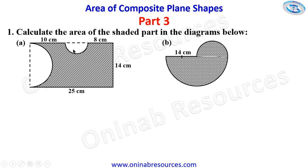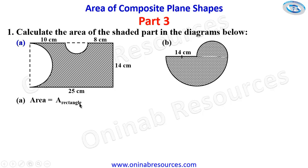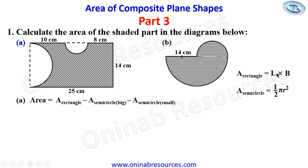We have two diagrams here, A and B. We start with A. For Problem A, we have a rectangle in which a big semicircle and a small semicircle are cut off from the rectangle. To calculate the area of the shaded part, we are going to calculate the area of the rectangle minus the area of the big semicircle minus the area of the small semicircle.